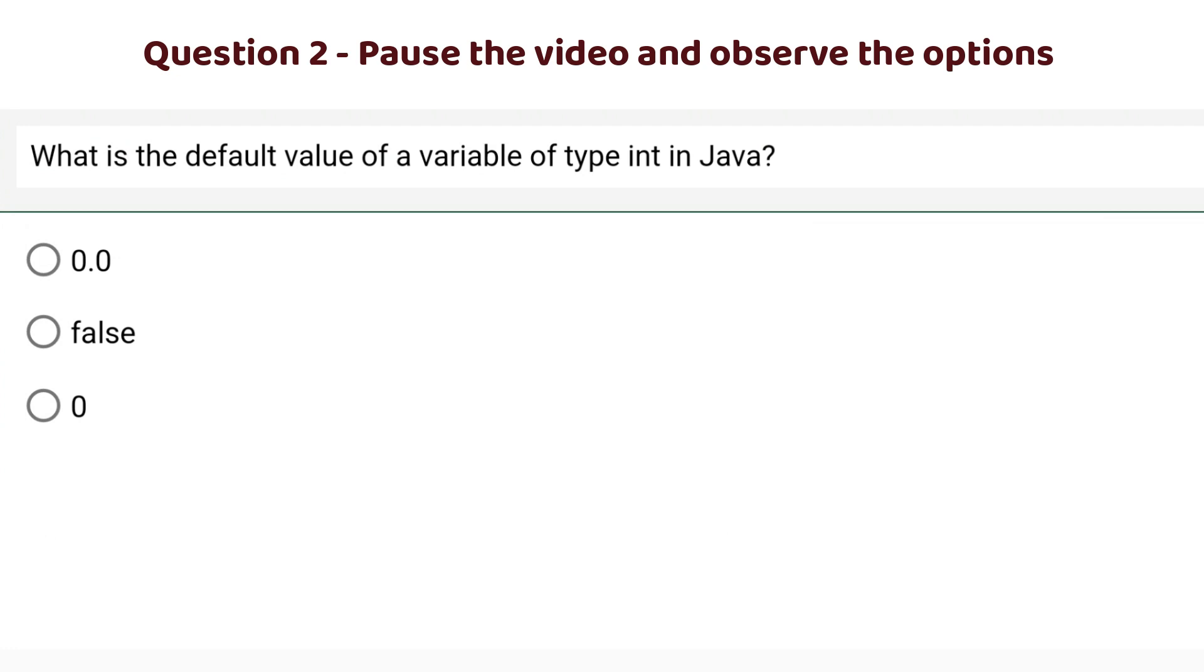The correct option is option number c: 0. 0.0 is a decimal value. Does integer store decimal value? No. Float and double store it. False is a boolean type. True and false, these both are boolean type, not integer. Integer is only zero, and it is the default value. If you initialize a variable of integer type without giving it any value, then the value will be zero if you print it.